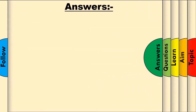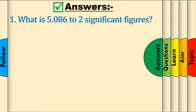Question 1: What is 5.086 to 2 significant figures? Using our method, we would have underlined 0 as the second significant figure and circled the 8 next to it. Since 8 is 5 or more, add 1 to 0 to get 1. Get rid of everything after the underlined number to get 5.1.